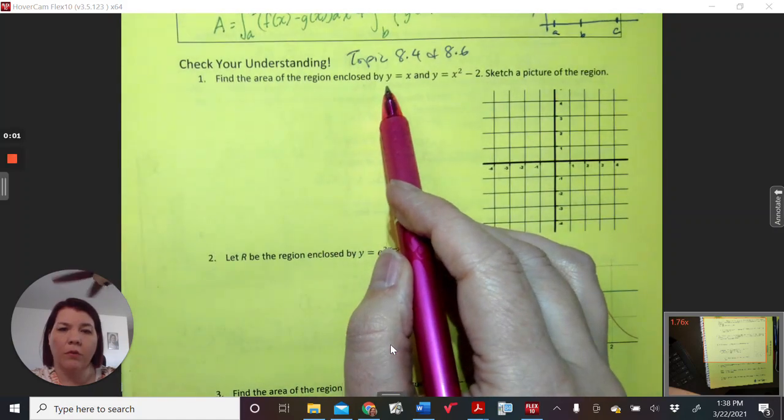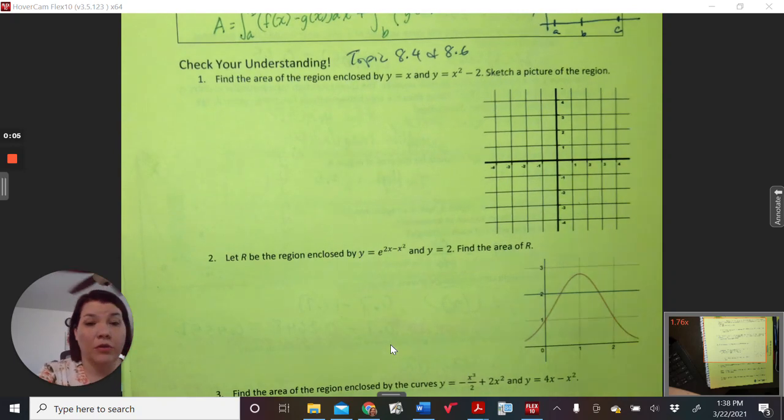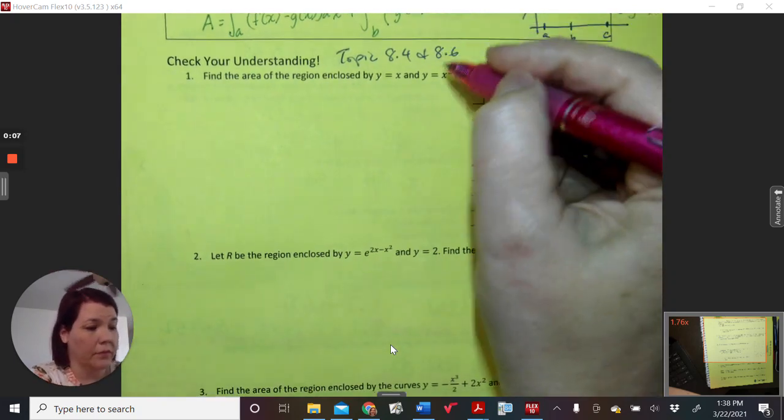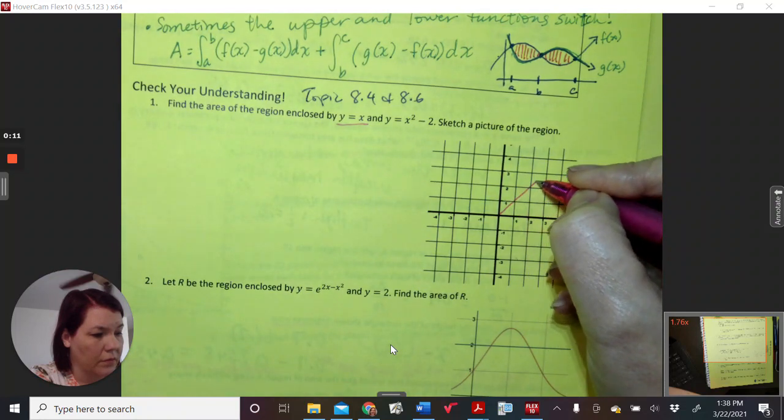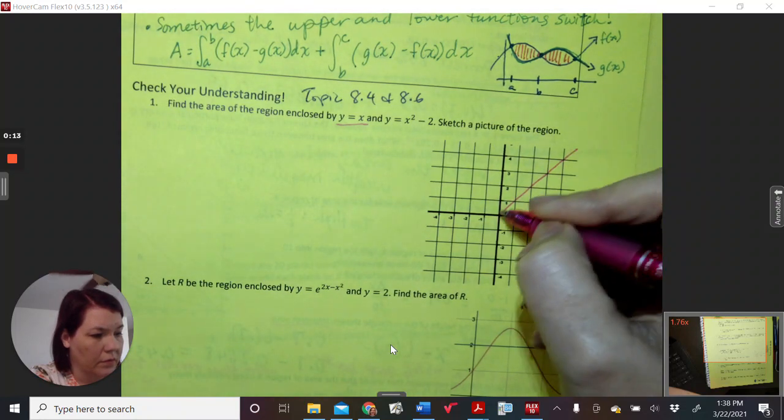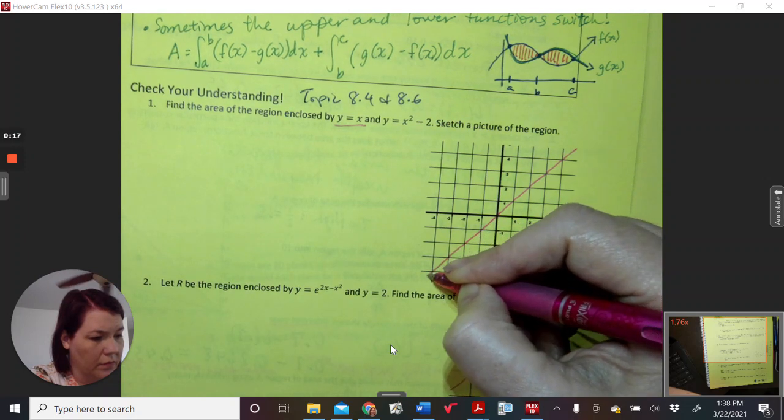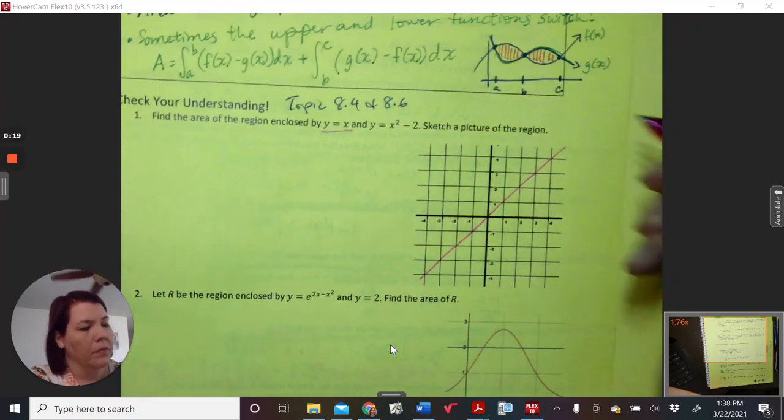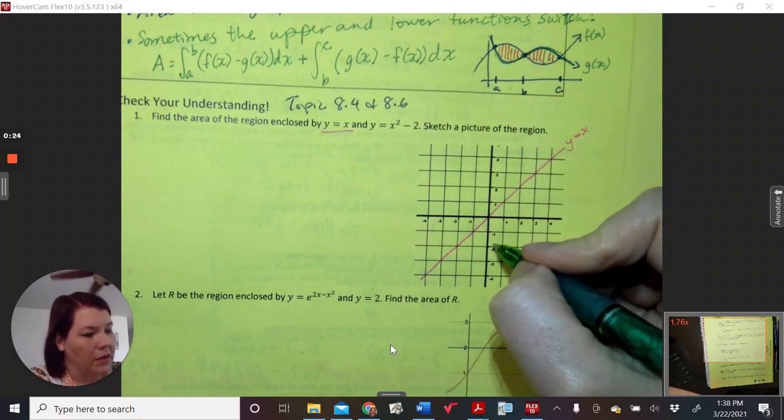Find the area of the region enclosed by y equals x and y equals x squared minus 2. So first we're going to draw y equals x. Then we will draw x squared minus 2.